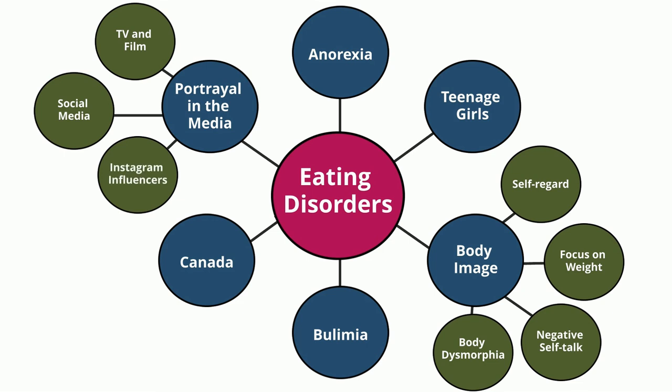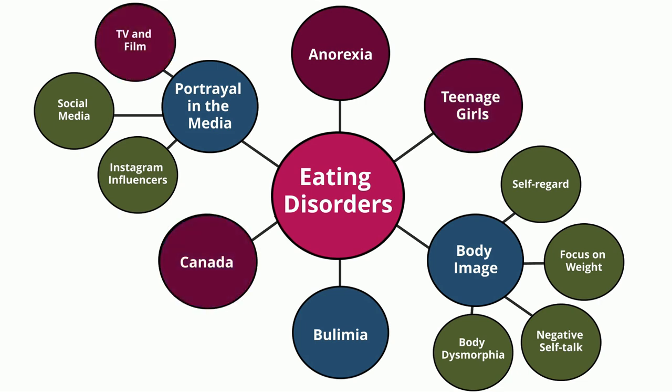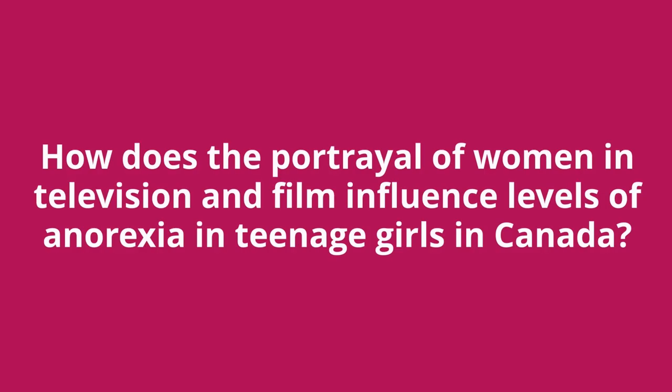Finally, we review our map to re-examine our initial topic question. So I'm interested in looking at anorexia specifically, teenage girls, in Canada, and I'll look at the effect of TV and film. Now my question becomes: how does the portrayal of women in television and film influence the level of anorexia in teenage girls in Canada?